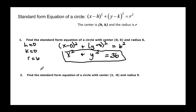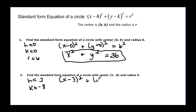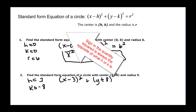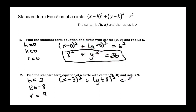Find the standard form equation with center three, negative eight, and a radius of nine. So h equals three, giving us x minus three, quantity squared. And k equals negative eight, so that gives us plus y minus negative eight, which is plus y plus eight, quantity squared. The radius is nine, so r squared is eighty-one.